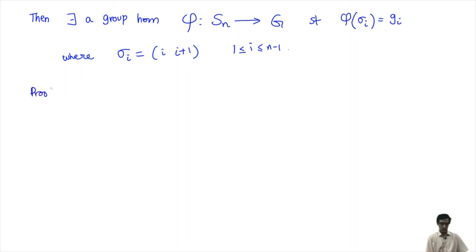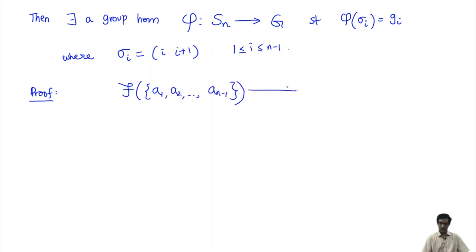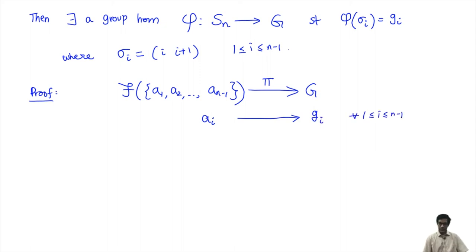Let us prove this. We go to the free group. From the free group F on generators a1, ..., a(n−1), we always have a map π̃ to G sending each ai to the special element Gi, for all i from 1 to n−1. This homomorphism exists by the universal property of free groups: we can specify arbitrarily where the generators map.